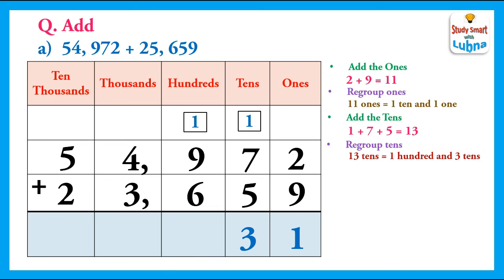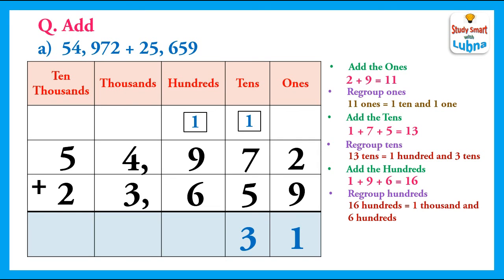After this, we will add the hundreds. In the hundreds column we have one, nine, and six. We add them: one plus nine plus six equals sixteen. So we regroup the hundreds: sixteen hundreds equals one thousand and six hundreds. We write six in the hundreds column and put one carry on the thousands column.